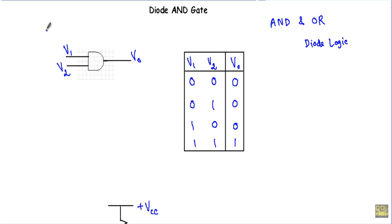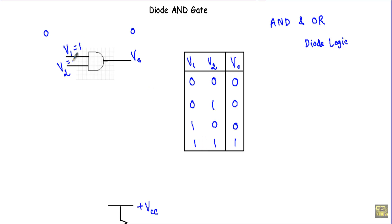The operation of this AND gate is: if we have at least one zero at the input side, our output voltage will be zero. The truth table of this AND gate: for inputs 0,0 output is zero; for 0,1 output is zero; for 1,0 output is zero; but if both inputs are at logic one, our output will be at logic one.